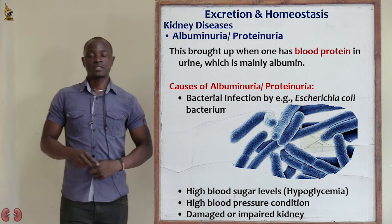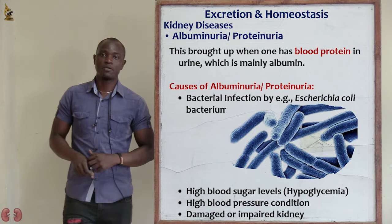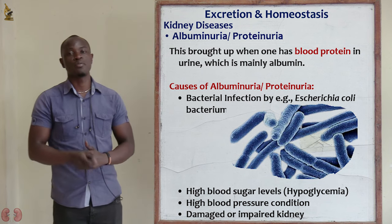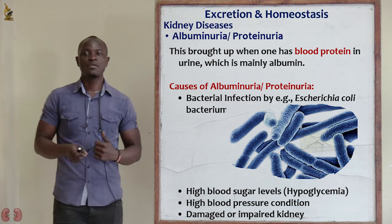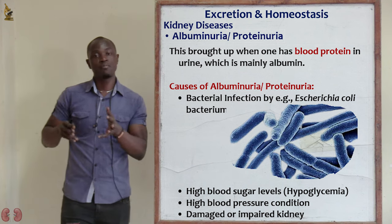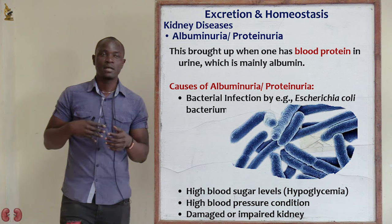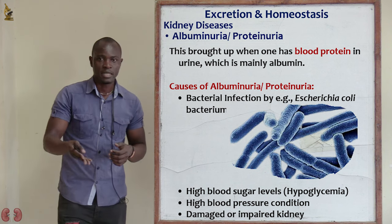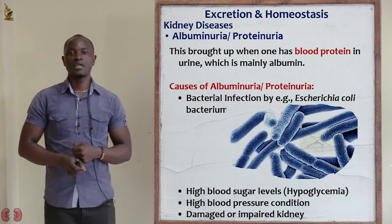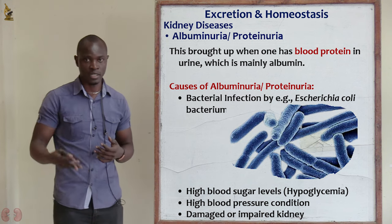So after that, the next disorder, which is the fourth disorder, we have albuminuria or proteinuria. Albuminuria or proteinuria is the next disease whereby albuminuria comes from the word albumin — the one for the egg — which is a protein. This disorder is one whereby albumin can be found in the urine.